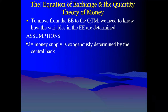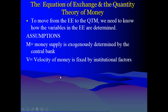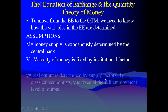Money is taken as an exogenous variable, which means that it is determined outside the model. As we know, it is determined by the central bank. The velocity of money is also exogenous, so it is fixed by institutional factors like the payment system and how the credit system works. Those ones are considered fixed.